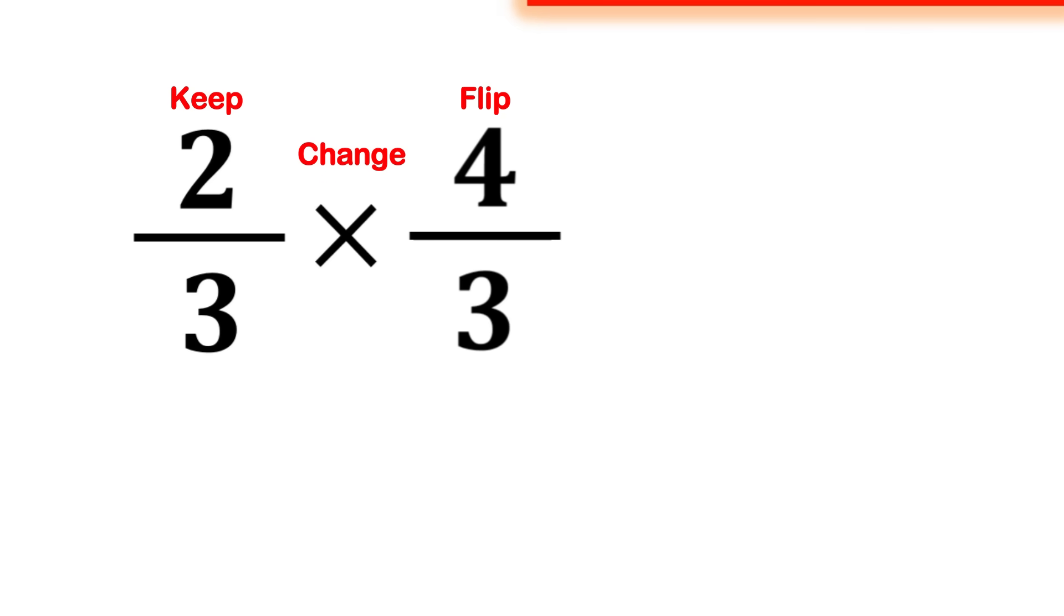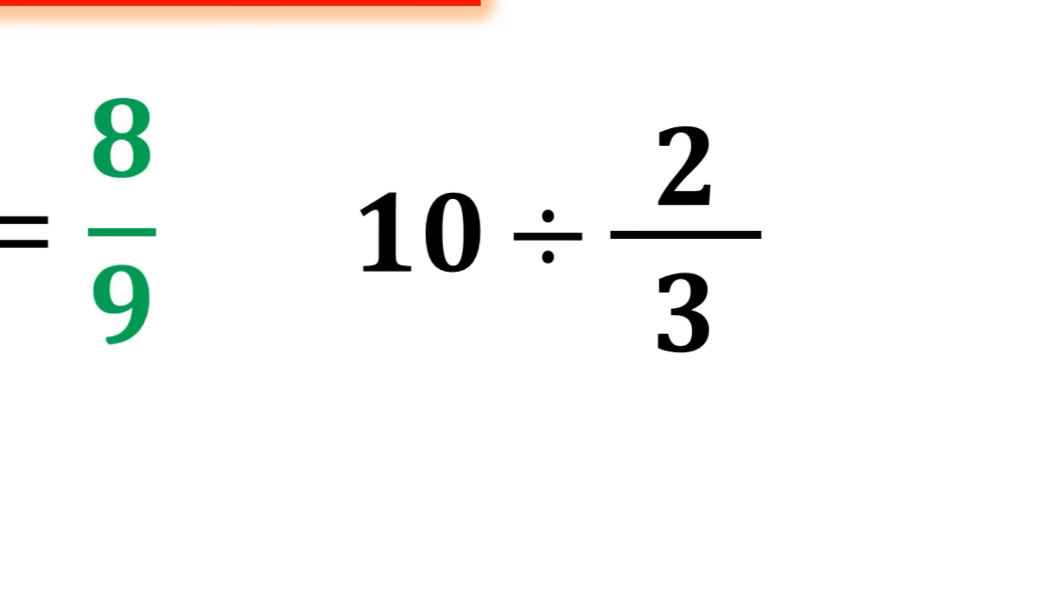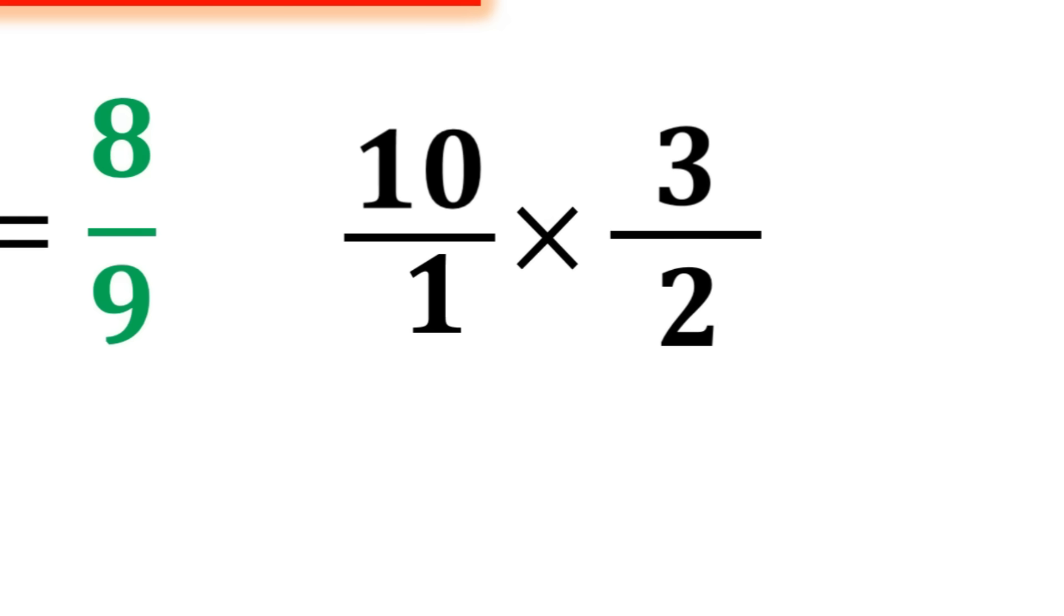Now we get two thirds multiplied by four thirds. Multiplying across gives us eight ninths. Or take this one: ten divided by two thirds. Remember, ten is the same as the fraction ten over one.